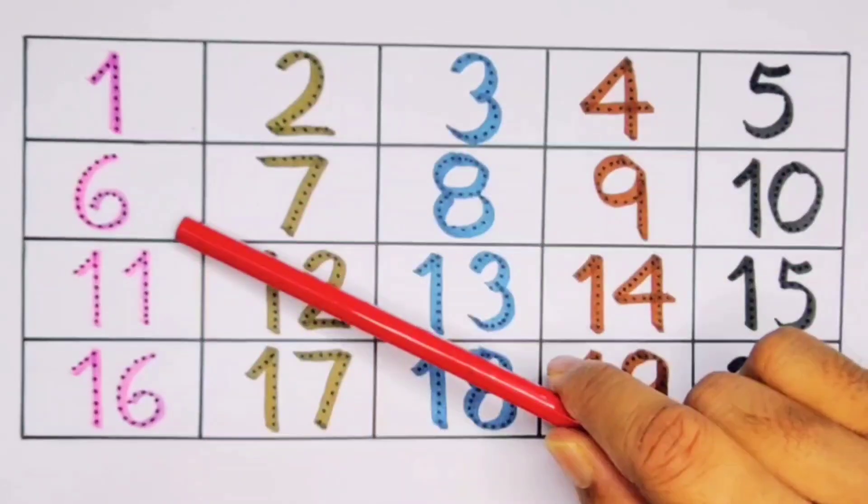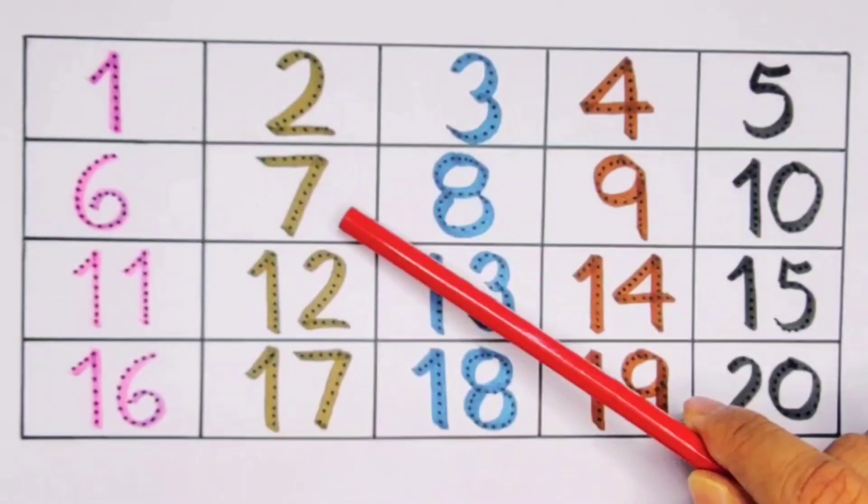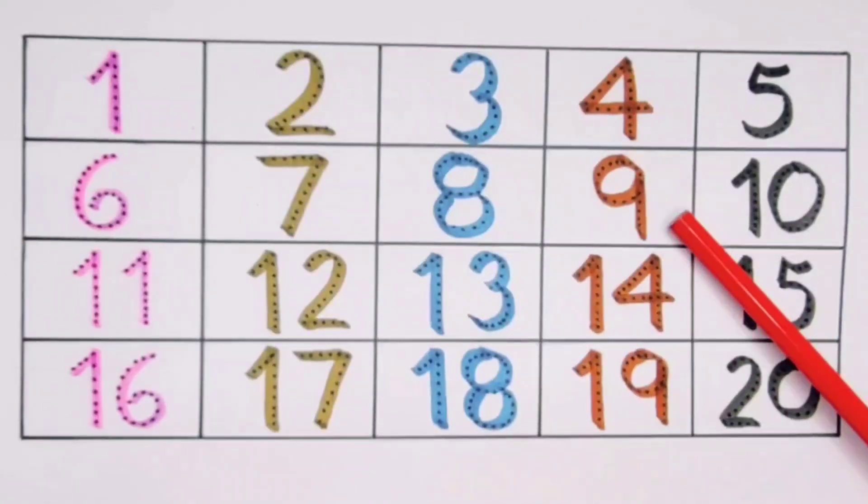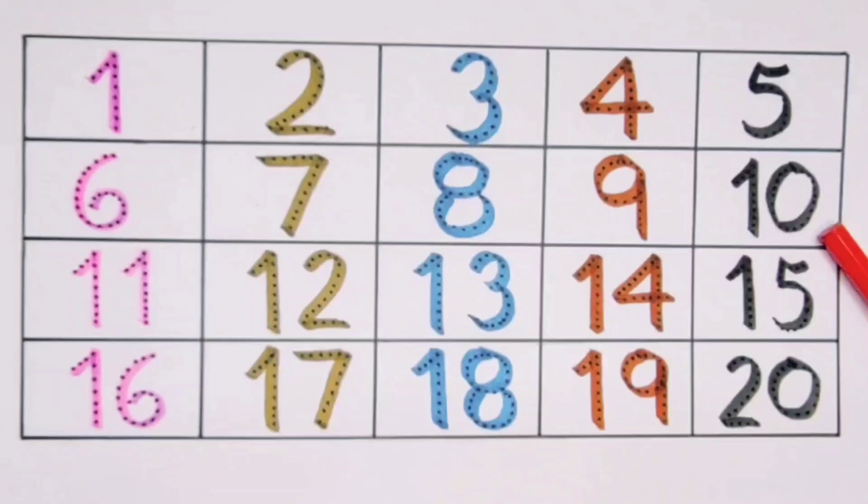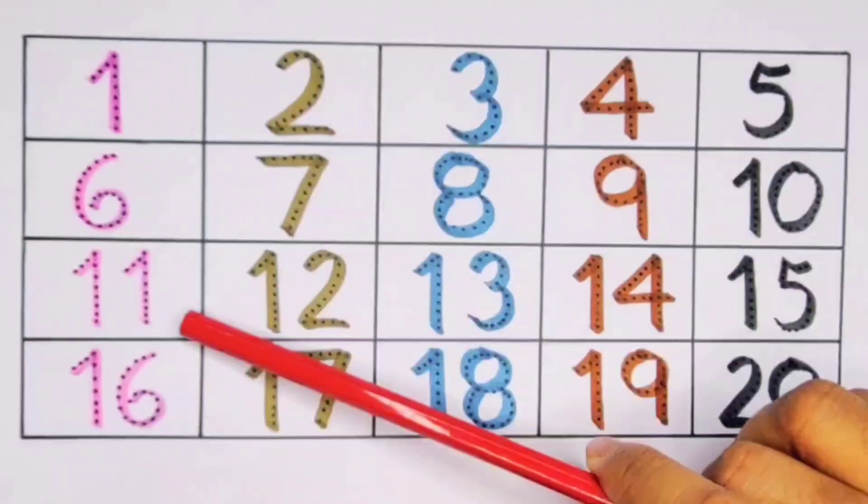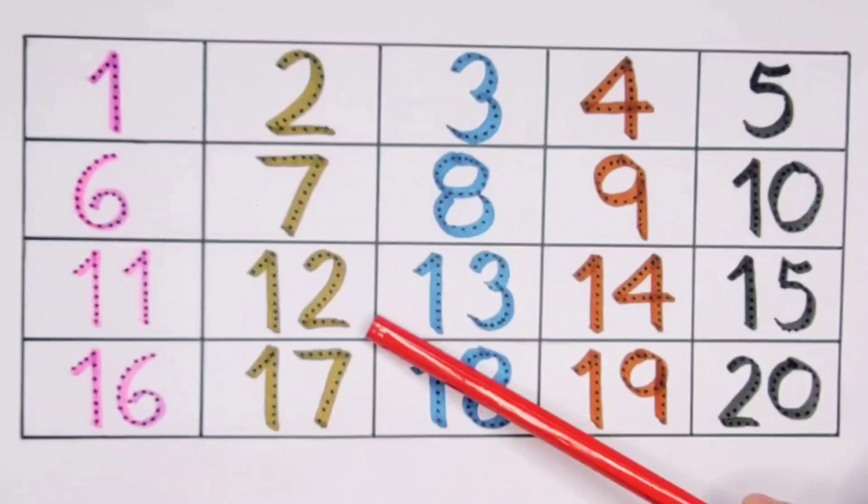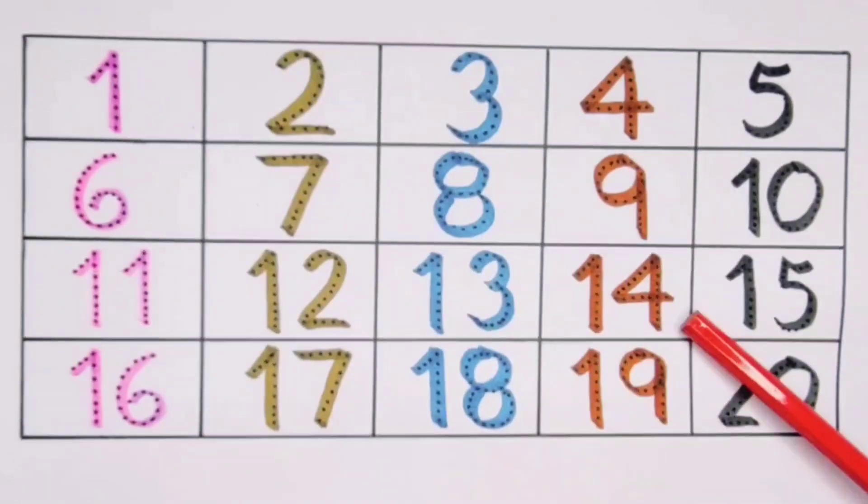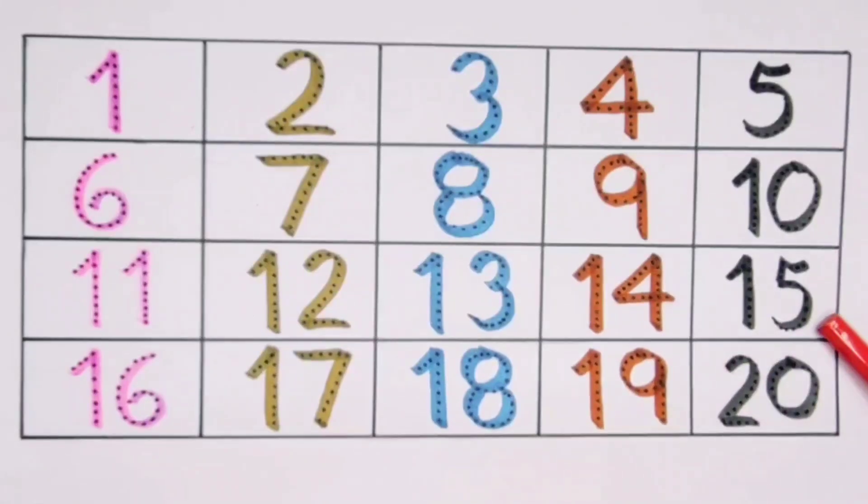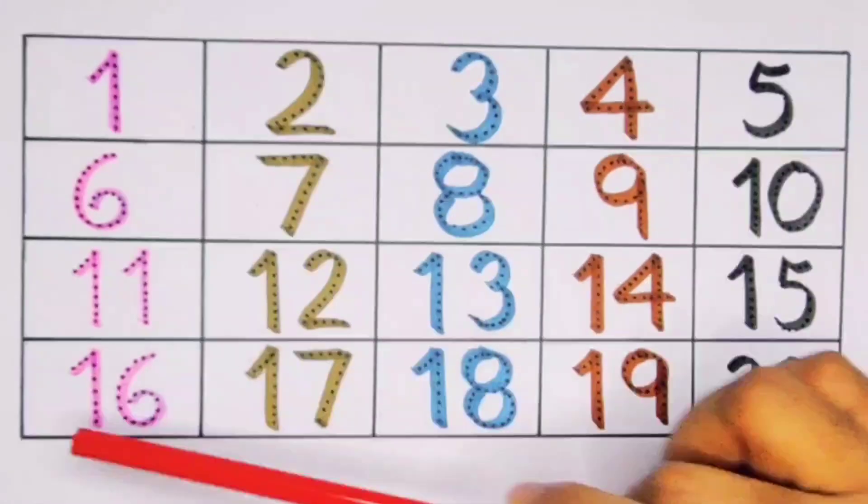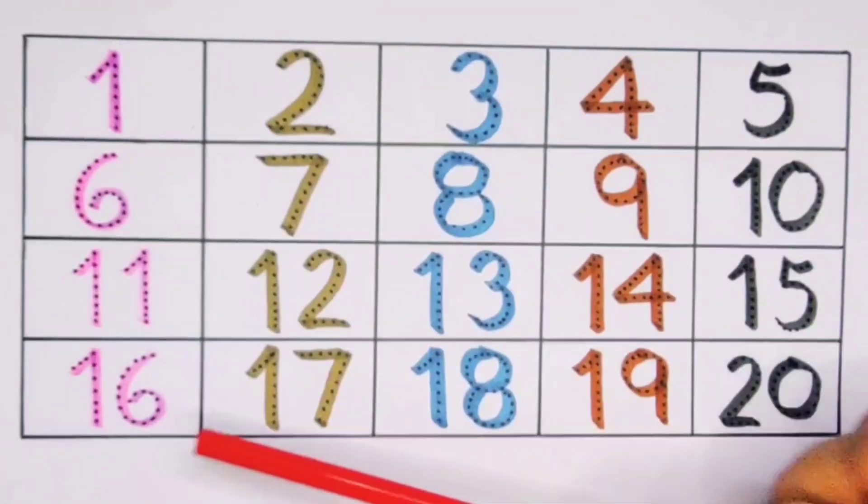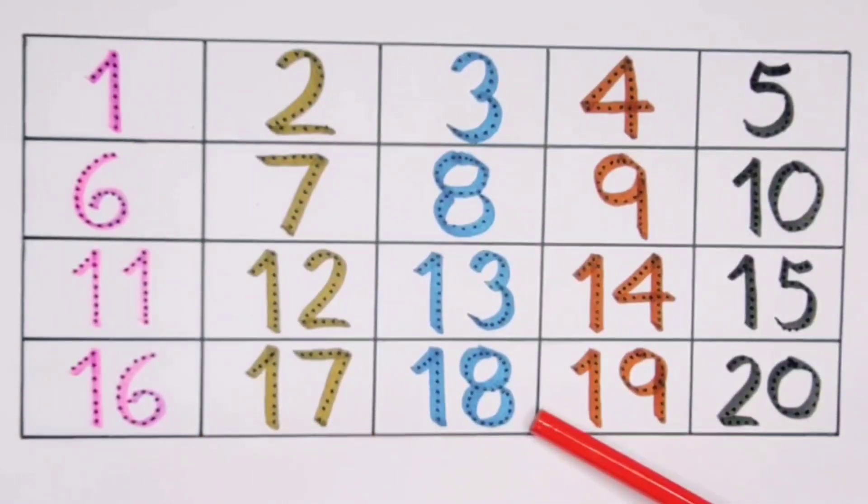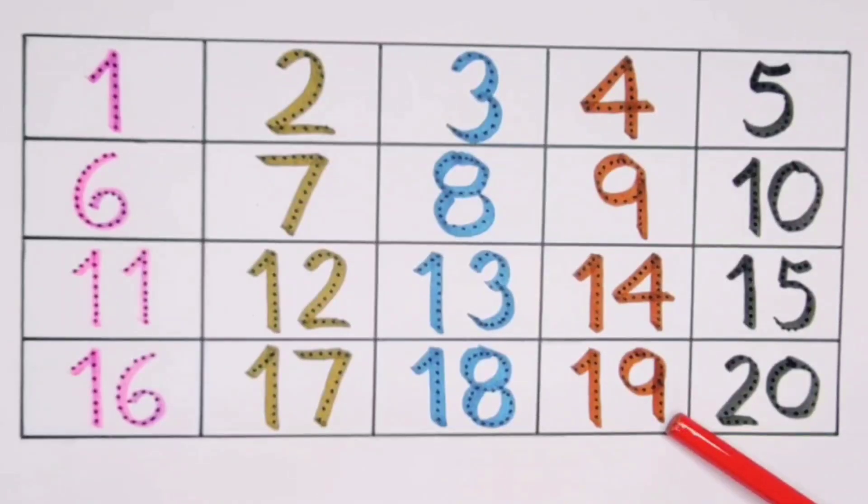7, 8, 9, 10. 11, 1-1, 11. 12, 1-2, 12. 13, 1-3, 13. 14, 1-4, 14. 15, 1-5, 15. 16, 1-6, 16. 17, 1-7, 17. 18, 1-8, 18. 19, 1-9, 19. 20, 2-0, 20.